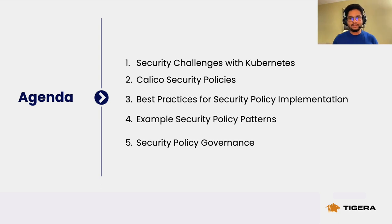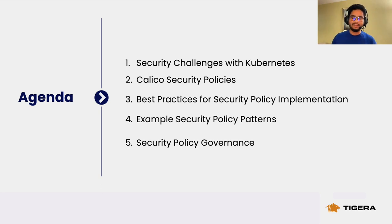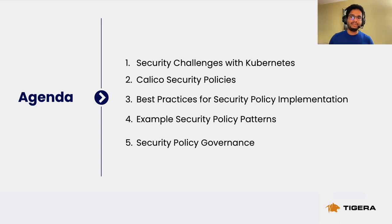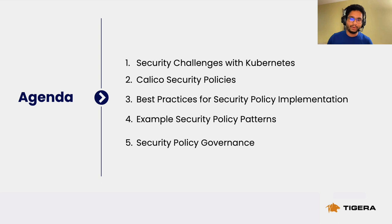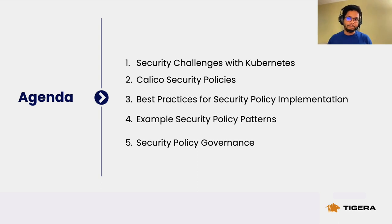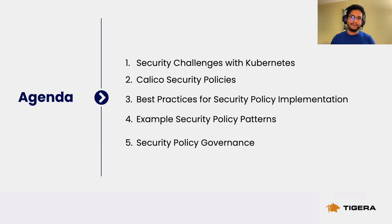We'll look at Calico security policies, the anatomy of a Calico security policy, and the declarative policy language. Next, we'll move on to best practices for security policy implementation with some example security policy patterns. One of the best ways to understand security policies is to look at examples and how those examples can be incorporated into your environments to build a security policy model. Once we have the model built, we'll look at how you can introduce policy governance.